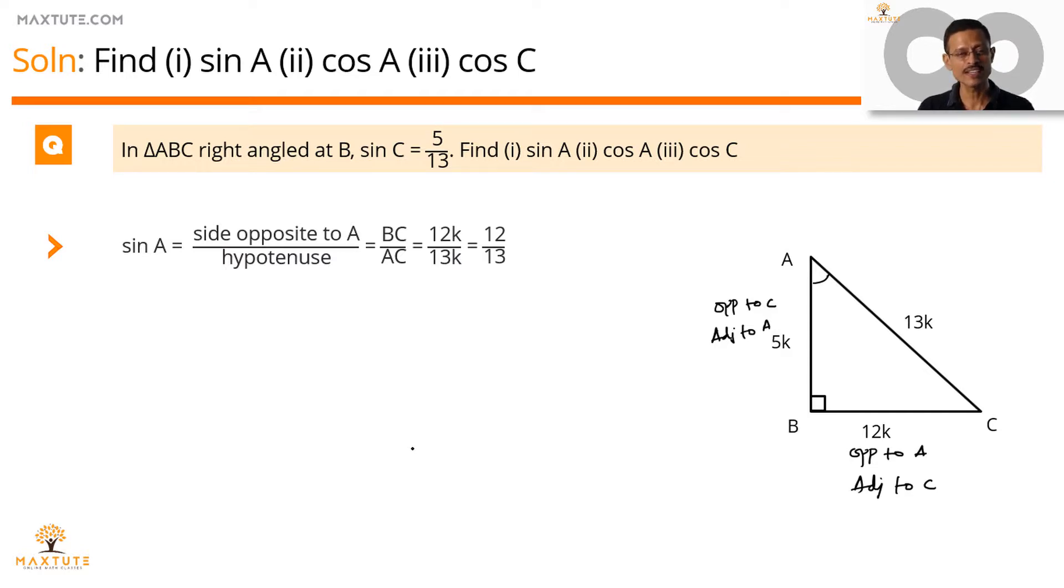Second one is finding out the value of cos A. Cos A is adjacent by hypotenuse. Adjacent to angle A. Side adjacent to angle A is equal to AB by hypotenuse AC. So that's equal to 5 by 13.